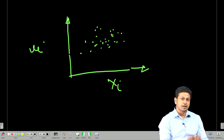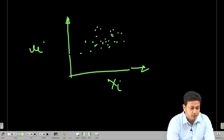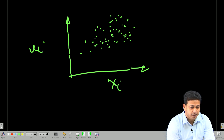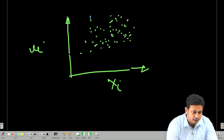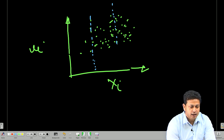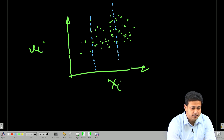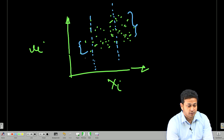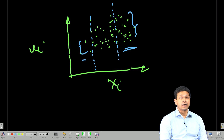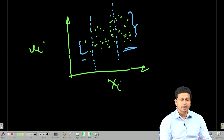Given this error term pattern, to understand if heteroscedasticity is present, we divide the whole range of observations into different parts. We create two dividers, separating the data, and we try to see if the variance of the lower-x portion and the variance of the higher-x portion are significantly different. If the variances are significantly different at lower and higher values of x, we can say there is heteroscedasticity.